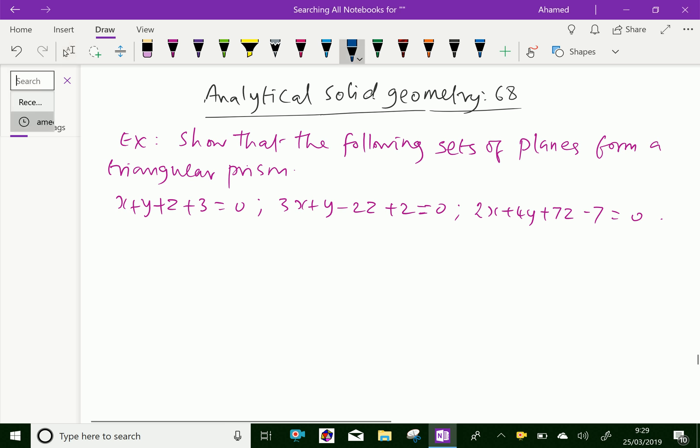Look at this example. Show that the following sets of planes form a triangular prism. Plane 1 is x+y+z=3. Plane 2 is 3x+y-2z+2=0. And plane 3 is 2x+4y+7z-7=0.